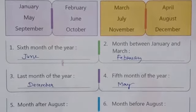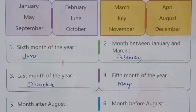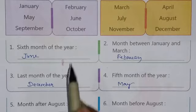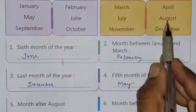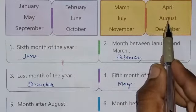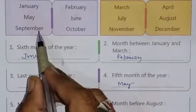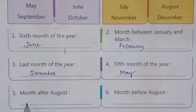Question number five: the month after August. Which month comes after August? Here is August, and after August the month will be September. So write down the answer: September.